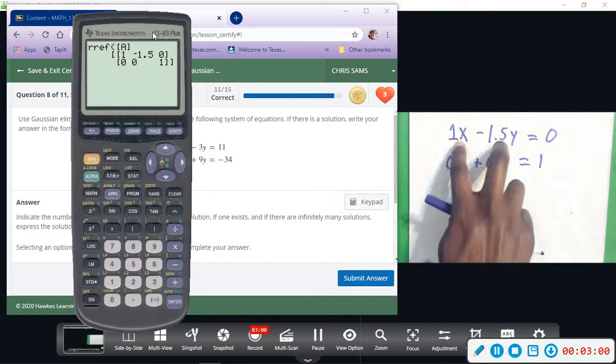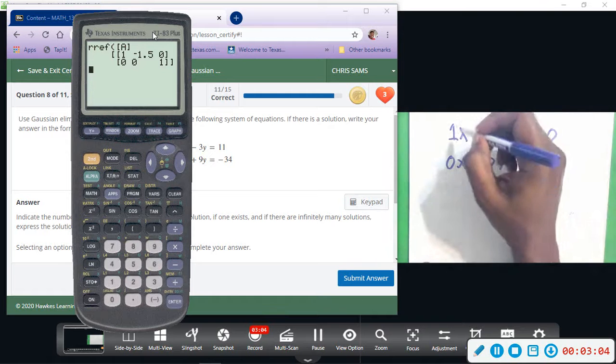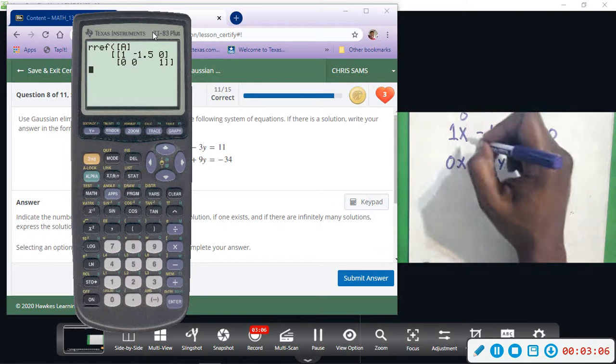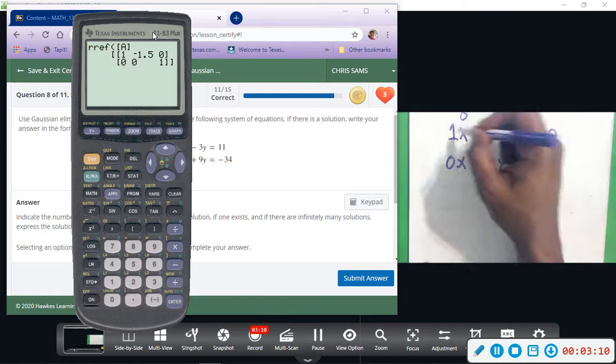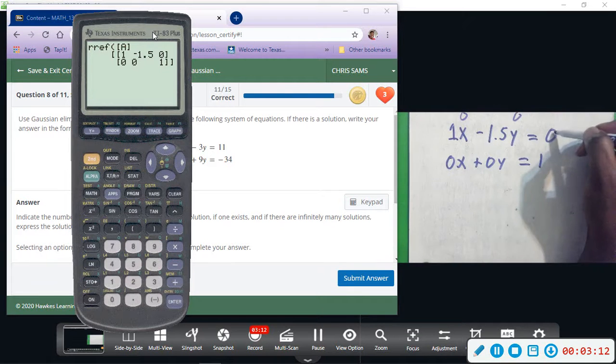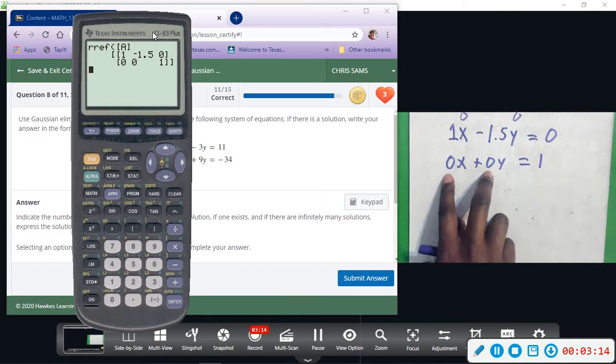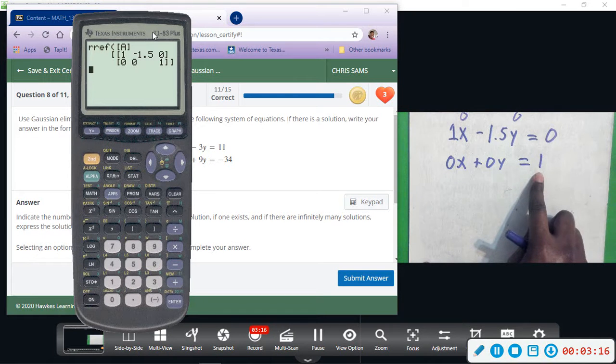So the only way for this to be true, this first equation, is if x was 0, so 1 times 0 would be 0, and y was 0, any number times 0 is 0. If that was the case, this would be 0, and then they say 0 plus 0 is equal to 1, and that's not true.